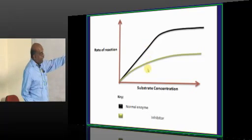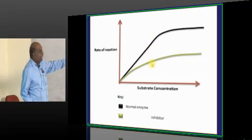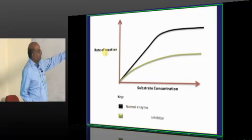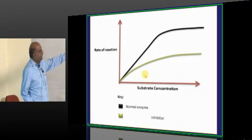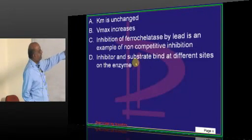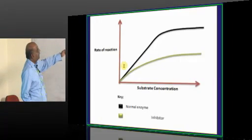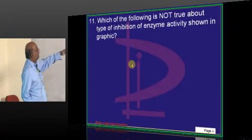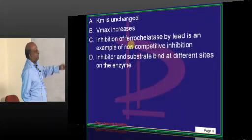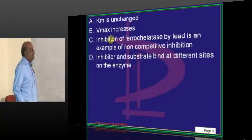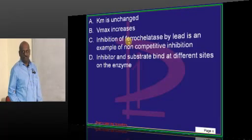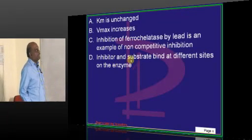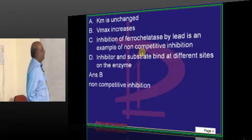So if you take the two curves, for any given value of the rate of reaction, the Km is unaffected. Then inhibition, Vmax decreases, maximum velocity achieved and the remaining two statements are true.